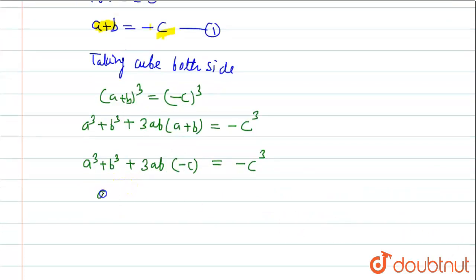Now a³ + b³ - 3abc = -c³. Now c³ will move to left side. So this will be equal to a³ + b³ + c³ - 3abc = 0.